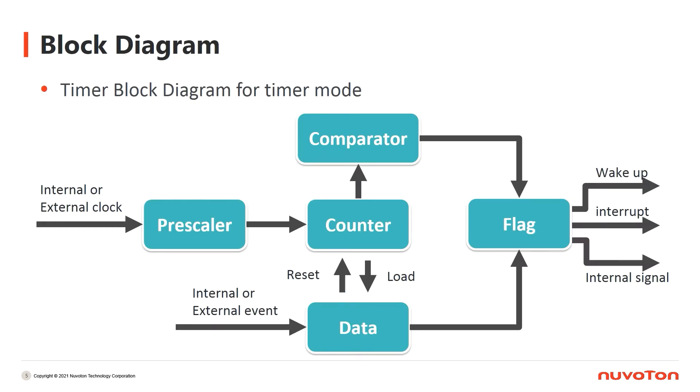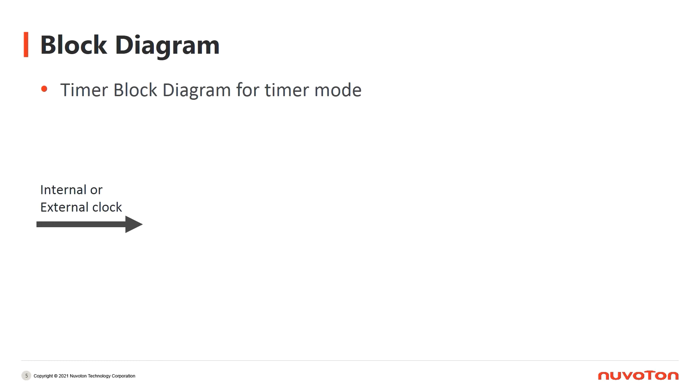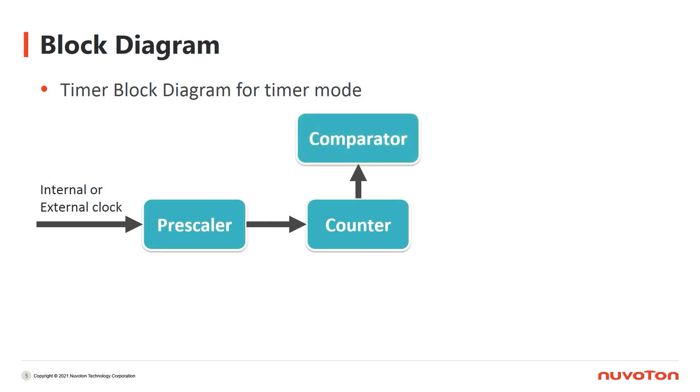This is a simplified block diagram of timer. It shows how the timer works briefly. Before getting a timer to work, you have to give it a clock source to tell it what tempo it will use to count. The clock source of each timer could be set individually. You can choose either an internal clock or an external clock as the clock source of a timer. The prescaler will adjust the frequency for the counter. Then, the counter starts to count up by the given frequency. When the value of the counter reaches the value set in the comparator, it will set the flag.